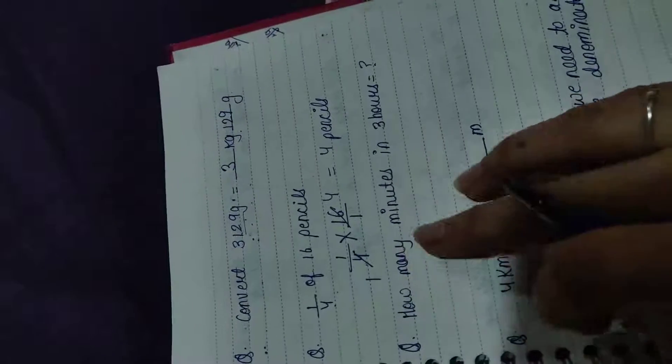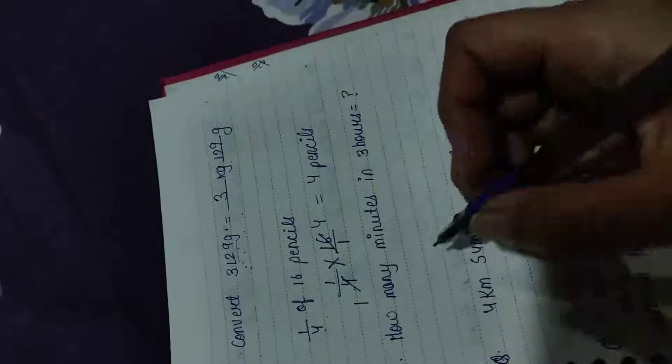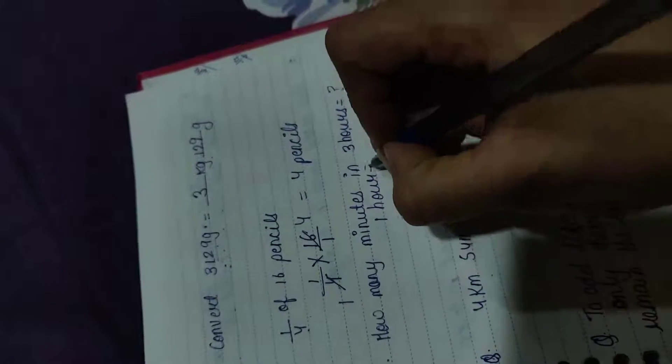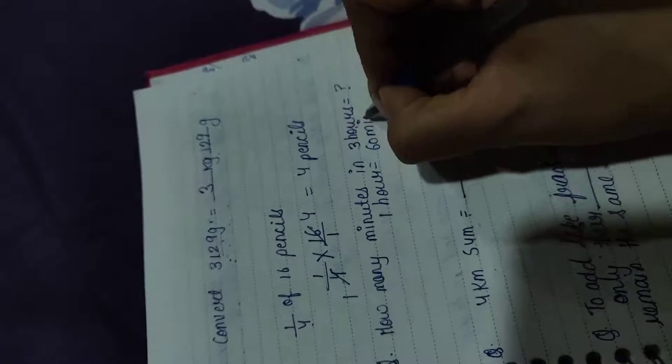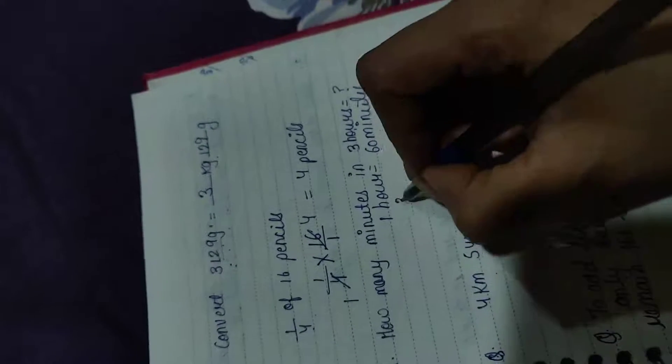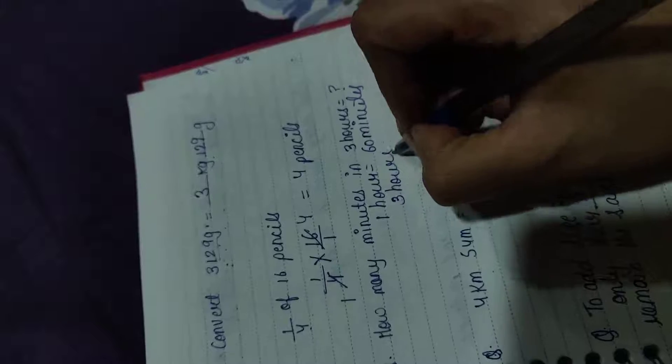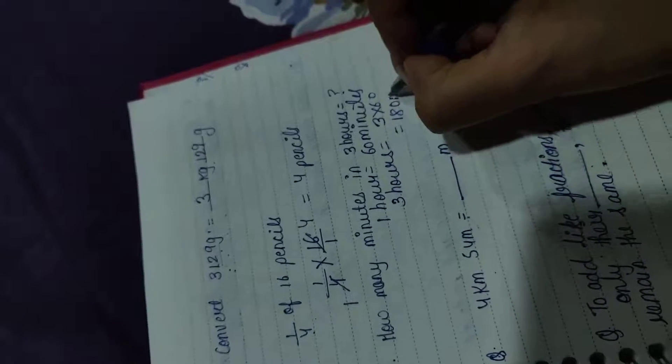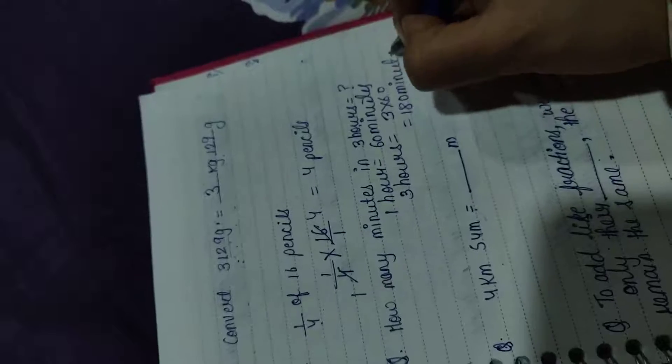Next question: How many minutes in 3 hours? 3 hours mein kitne minutes hote hain? Sab se pehle 1 hour mein kitne minute hote hain? 60 minutes. So in 3 hours we have 3 into 60 that is 180 minutes.